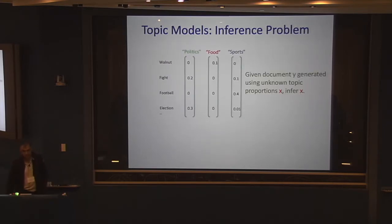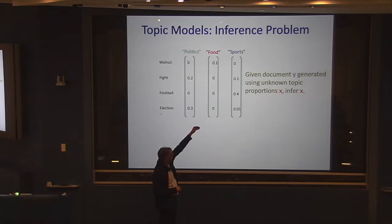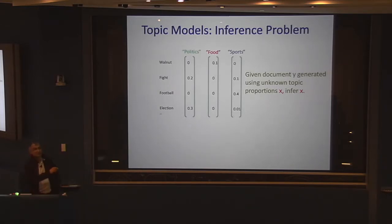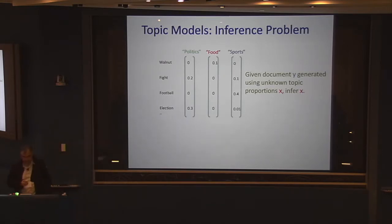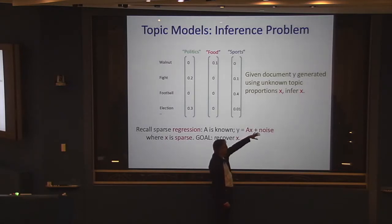Given a document y generated using unknown topic proportions x, infer x. It's a Bayesian setting — x was chosen from some distribution and is a sparse vector. If the document is even reasonably large — a few hundred words — x is pretty well determined because it's sparse. The question is whether you can do it efficiently. It turns out this is NP-hard: if you allow the number of topics and words to go to infinity, this is a very difficult form of sparse regression with a known matrix A, where the monkey picked out some sparse x and A times x plus noise gives you the observation.